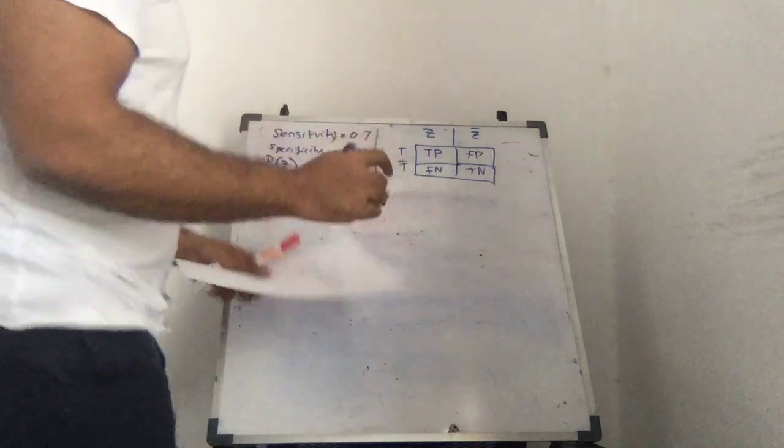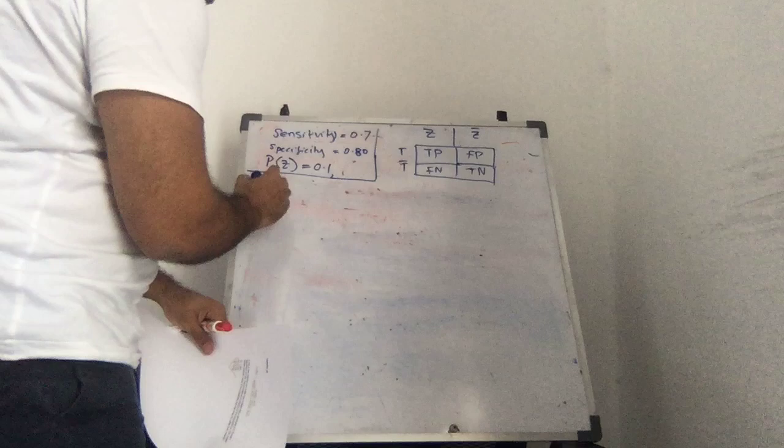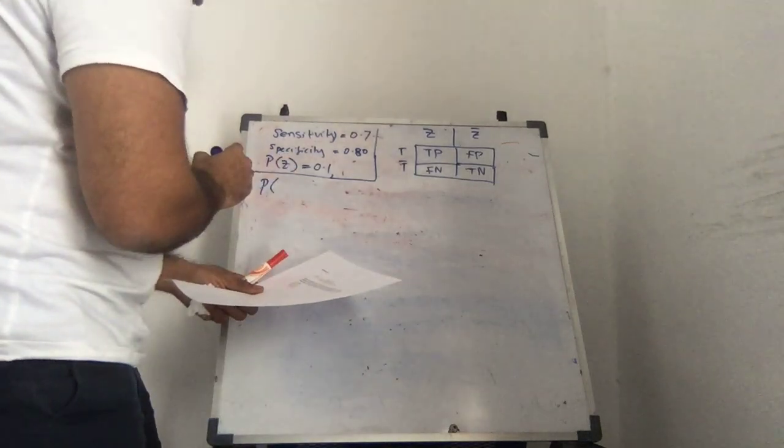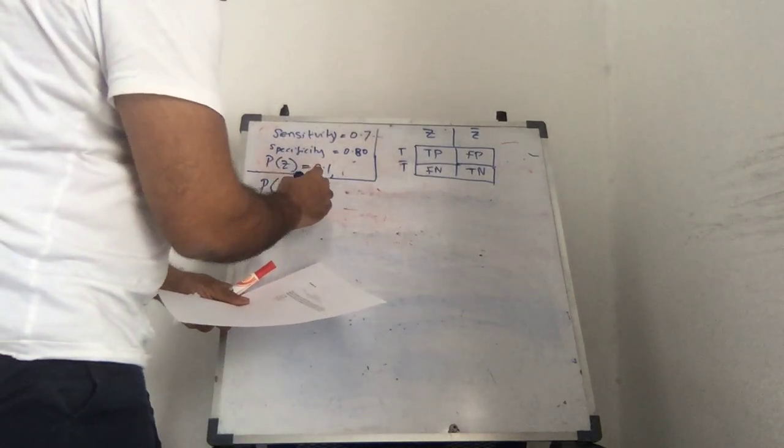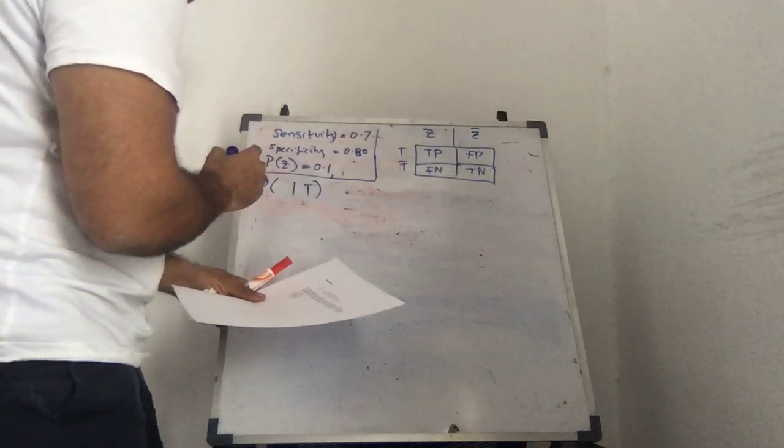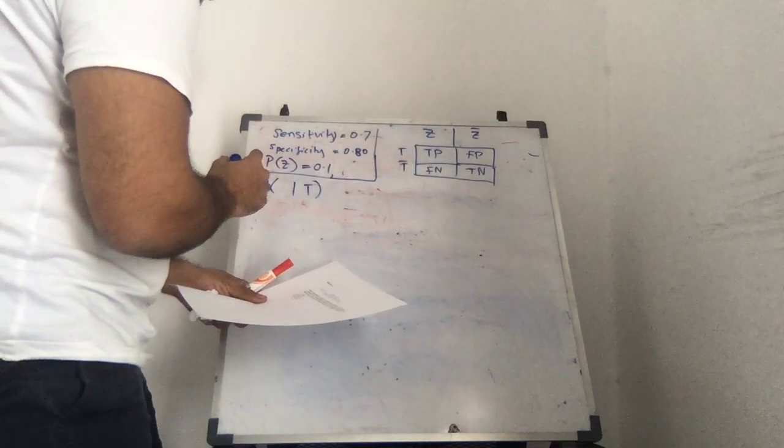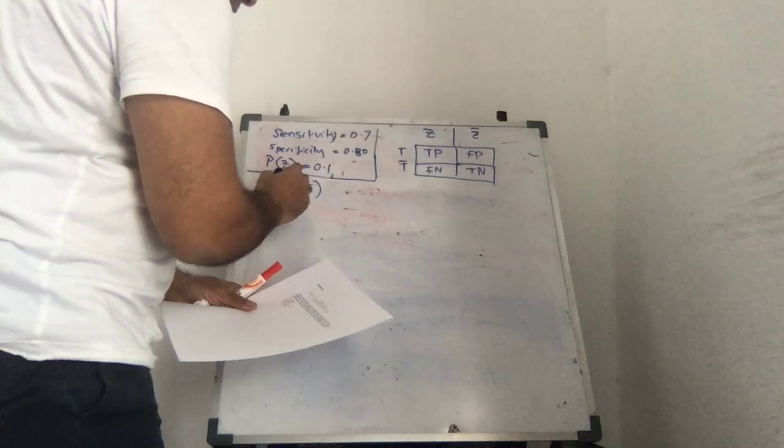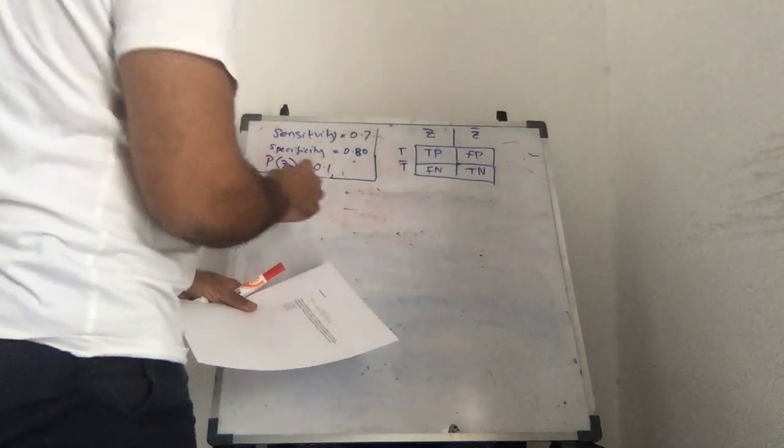So what we're asked to find is the probability that, given that Angela tested positive, what is the probability that she does not suffer malaria? So not Z. Right?